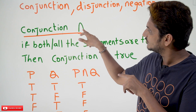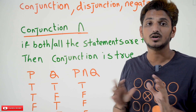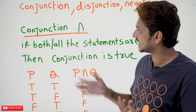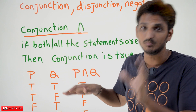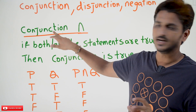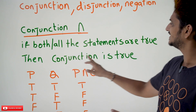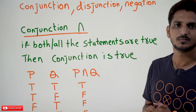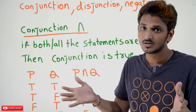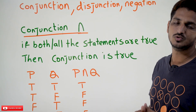Conjunction — the symbol given for this is ∧. This conjunction works similar to 'and' in English. If both or all the statements are true, then only conjunction is going to be true. If you take two statements, both statements should be true. If you take n statements, all statements should be true — then only conjunction is going to be true.